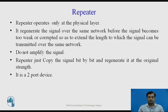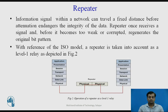A repeater operates only at the physical layer. It simply regenerates the signal over the same network before the signal becomes too weak or corrupted, extending the length over which the signal can be transmitted. It does not amplify the signal — it regenerates it. The repeater copies the signal bit by bit and regenerates it at the original strength so it remains recognizable at the receiver end. It is a two-port device.